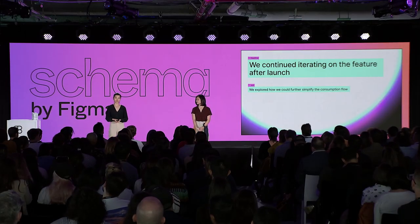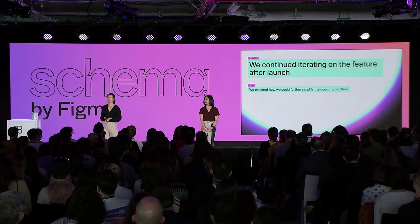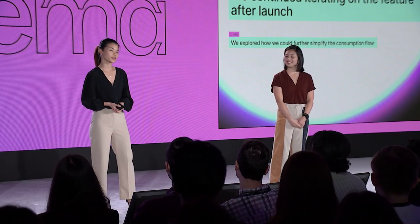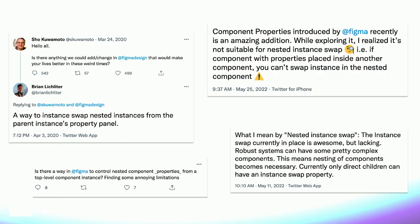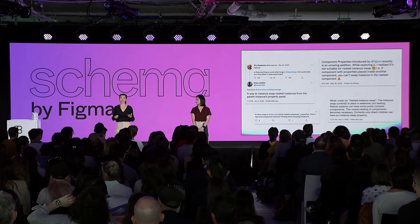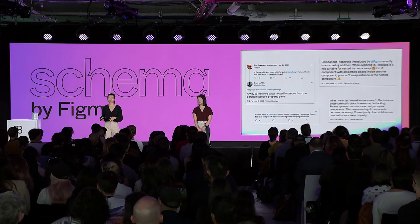After optimizing for all of these issues and edge cases, we finally launched component props version one at Config this past May. But even after launch, we got a lot of both external and internal feedback that the consumption experience was still less than ideal for DS consumers. One of the largest pain points — even before we started working on component props — was that it's really difficult for people to navigate nested layer hierarchies. So over the summer, we went back to the drawing board to think about fast follows to make the lives of DS consumers a lot easier.